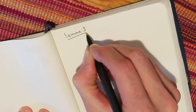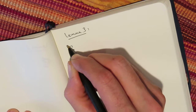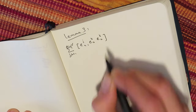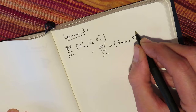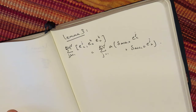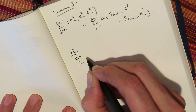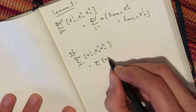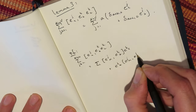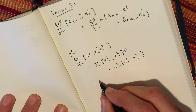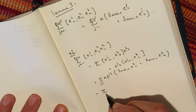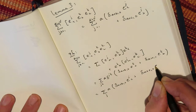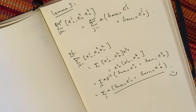Lemma three is a simple Lie bracket computation we'll use many times, so we do it once and for all. In particular, the sum over two copies of the vector space index j and k of the Lie bracket of e_{j,a} with e_{k,b} e_{k,c} is given by a times a sum over one copy of the vector space index with Kronecker delta functions and one copy of those basis elements — just like that. This can be shown by direct computation, in fact we just did.